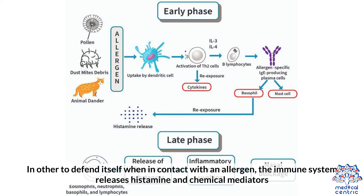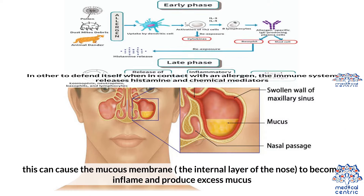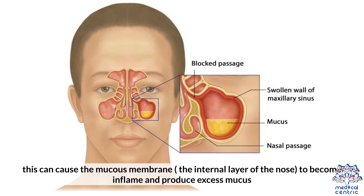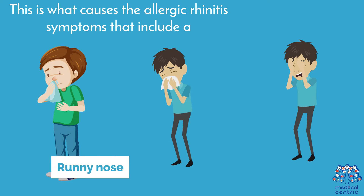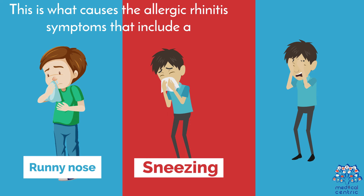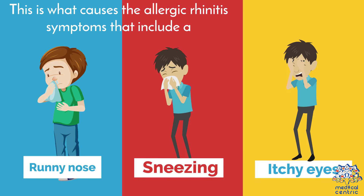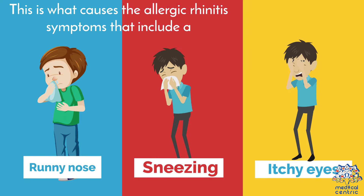Causes: In order to defend itself when in contact with an allergen, the immune system releases histamine and chemical mediators. This can cause the mucous membrane, the internal layer of the nose, to become inflamed and produce excess mucous. This is what causes the allergic rhinitis symptoms that include a runny nose, sneezing, and itchy eyes.